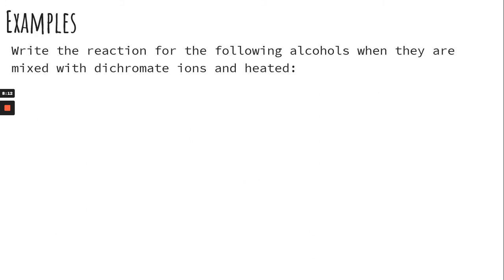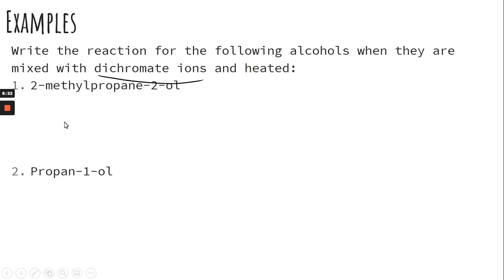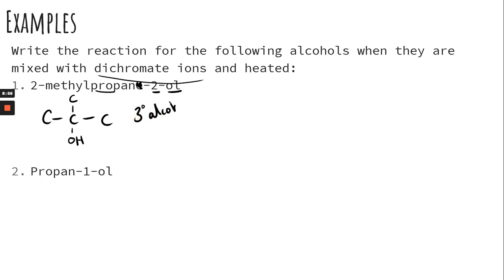Let's look at two examples. The first is 2-methylpropane-2-ol mixed with dichromate and heated. First, determine if it's primary, secondary, or tertiary — it helps to draw it out. 'Prop' means 3 carbons; on the second carbon there is a methyl group and also the hydroxyl group. That means this is a tertiary alcohol, so there is no reaction.